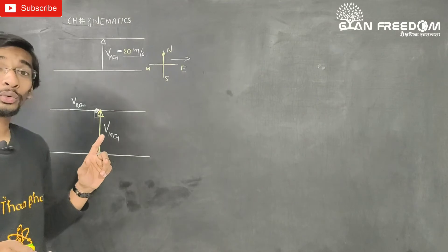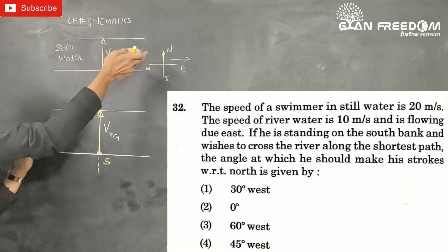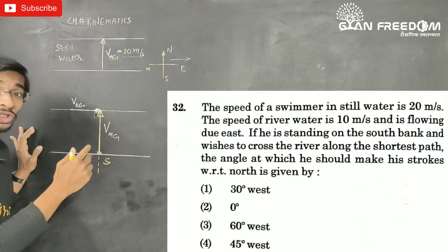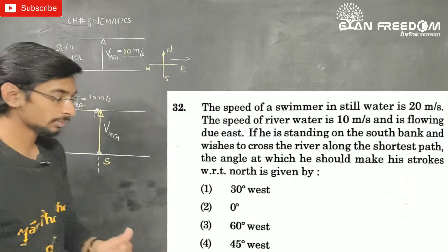This is the velocity of man with respect to ground, but this velocity of man with respect to ground is in still water which is 20 meter per second. It is not enough here. And this velocity of river with respect to ground is 10 meter per second.